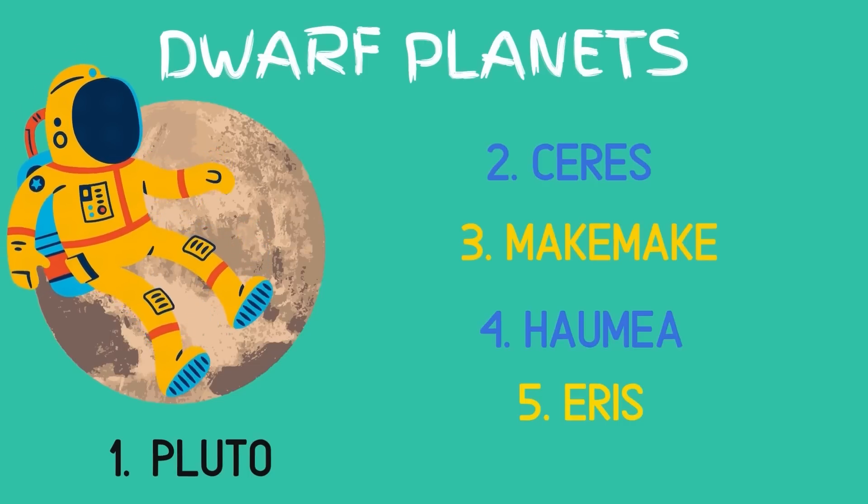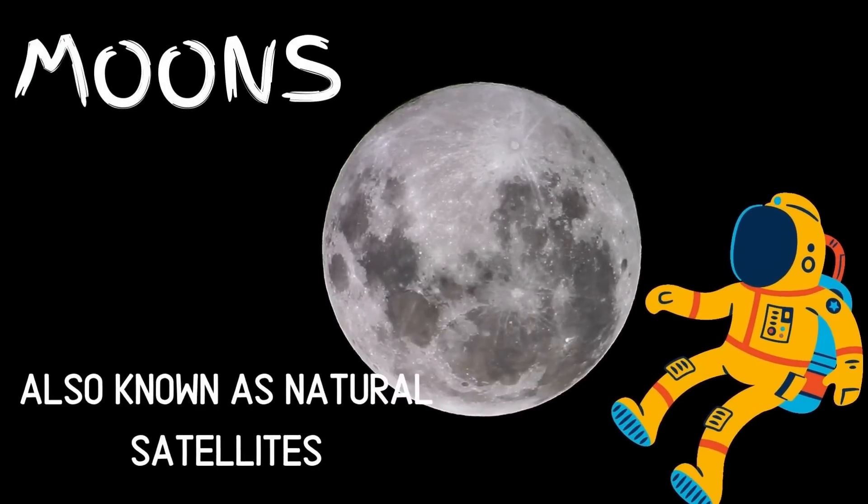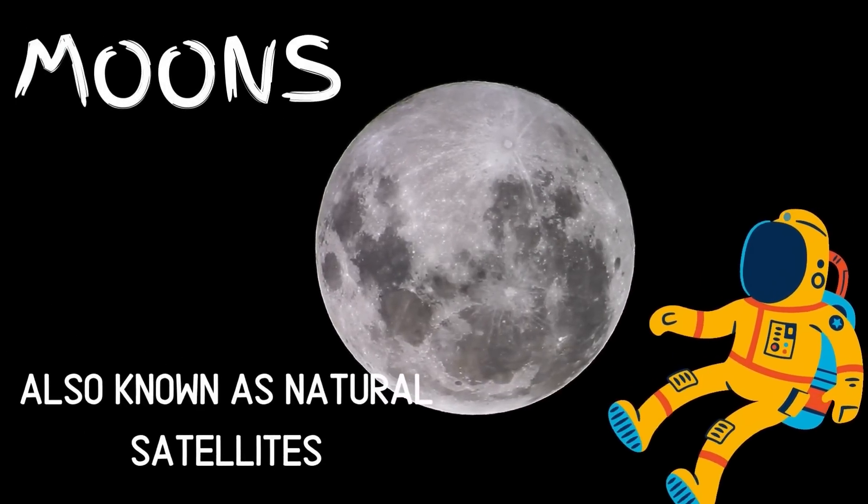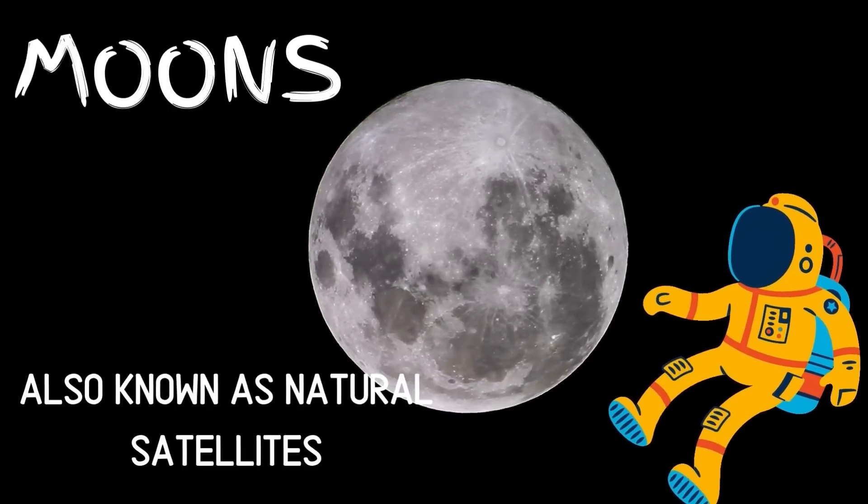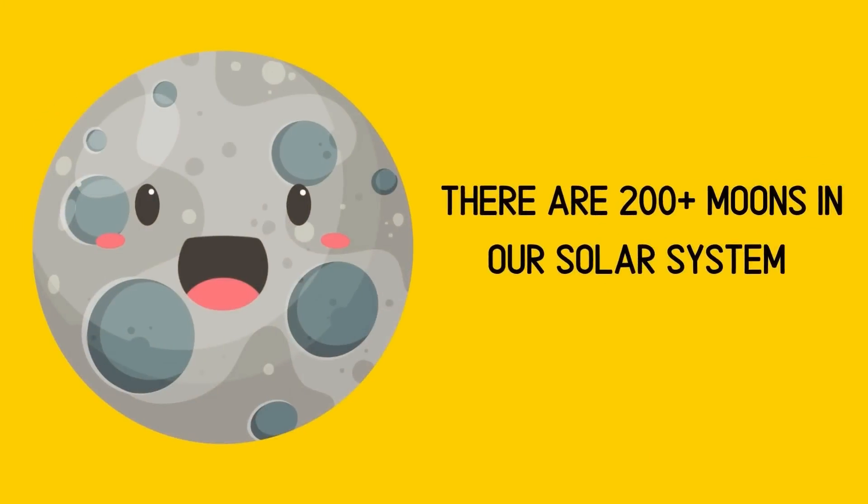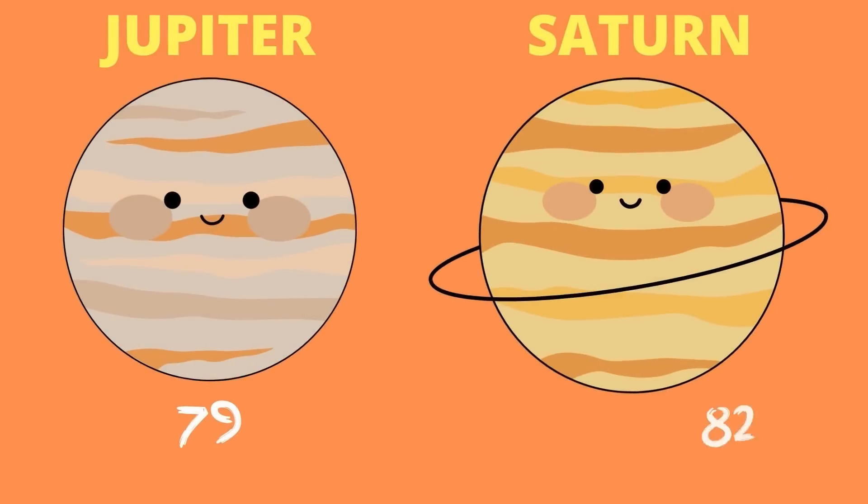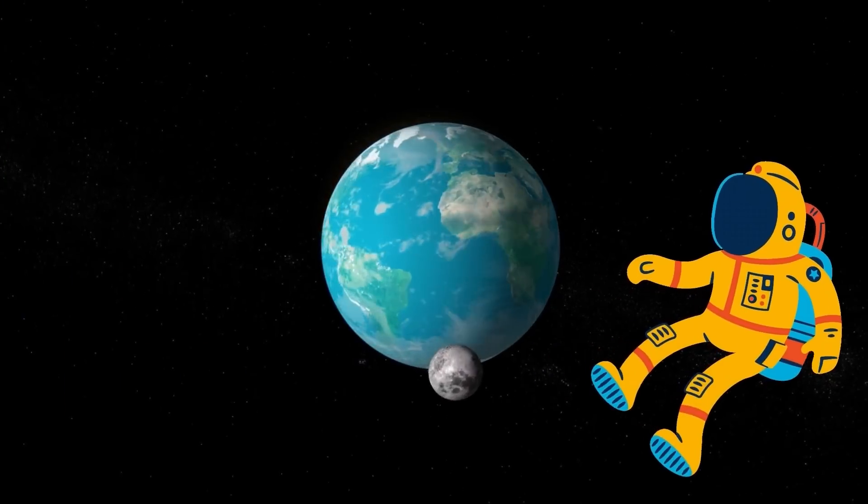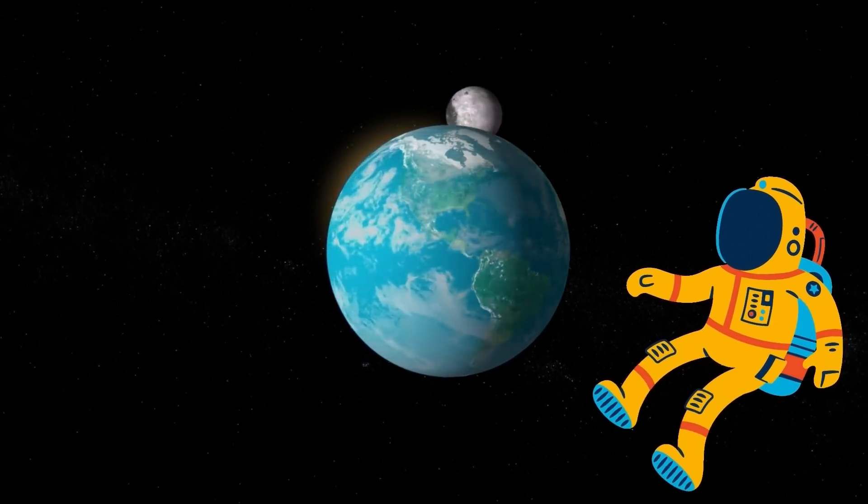Let's learn about the moons. Moons are also called natural satellites. There are more than 200 moons in our solar system. Do you believe that? Most major planets except Mercury and Venus do not have any moons. Saturn and Jupiter have the most moons. Saturn has 82 moons and Jupiter has 79 moons. Moons come in many shapes, sizes, and types. Our Earth has one moon. How beautiful.